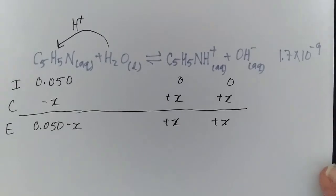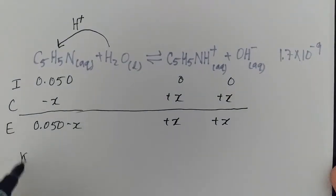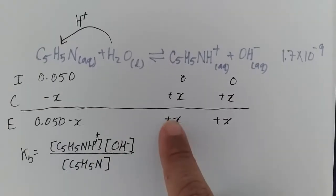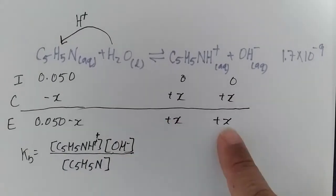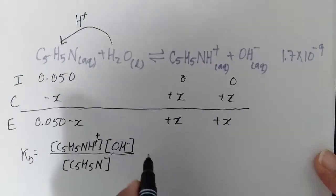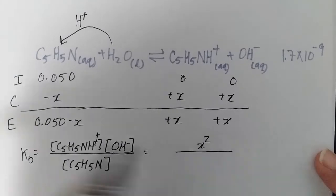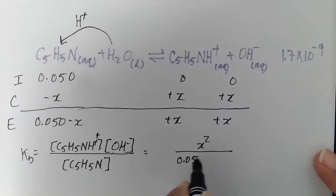So our Kb for this reaction is products over reactants. The protonated pyridine concentration at equilibrium will be X. The hydroxide concentration at equilibrium will be X. So X times X is X squared over 0.050 minus X.